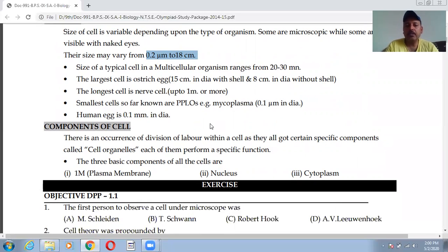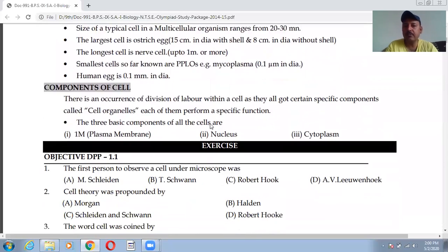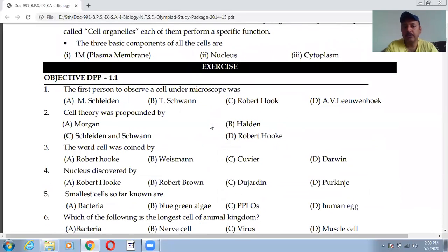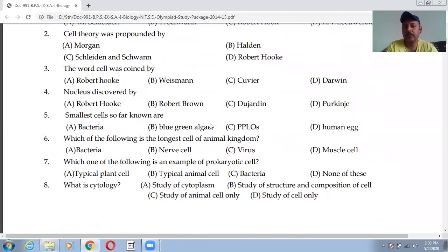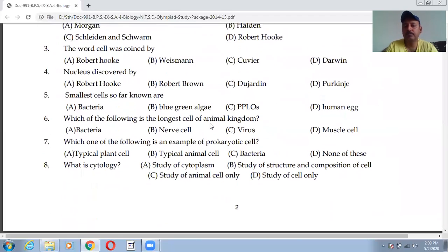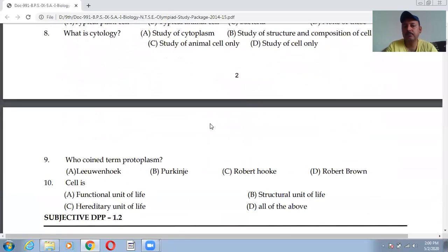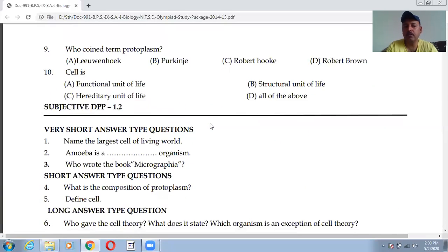Now the basic components of the cell. There are three basic components of the cell: one is the plasma membrane, another is nucleus, and third one is cytoplasm. Now all these we will discuss one by one. So this is the practice questions which are given for you that you can go through and try to solve.